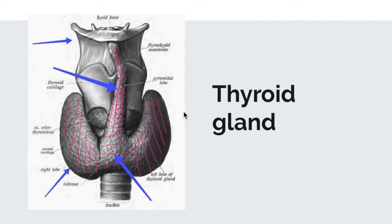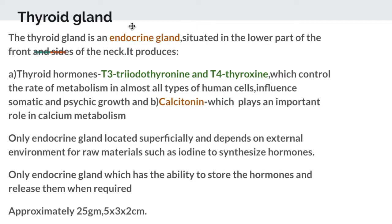Let's talk about the thyroid gland. The thyroid gland is an endocrine gland situated in the lower part of the front and sides of the neck. It produces two hormones, T3 and T4, and also produces calcitonin. It is the only endocrine gland located superficially, depending on the external environment for raw materials such as iodine to synthesize hormones.